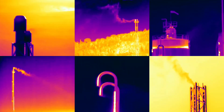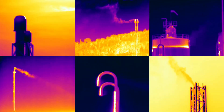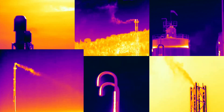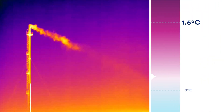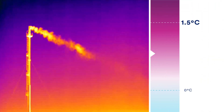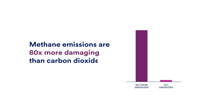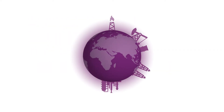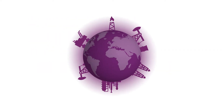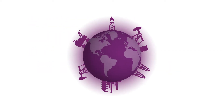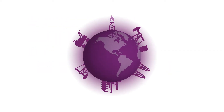Reducing methane emissions from the oil and gas industry is critical if we are to stay within the 1.5 degree warming target. There's no time to wait. Methane emissions are 80 times more damaging than carbon dioxide in the short term. Across the globe, interest is growing in reducing methane pollution from the oil and gas industry.